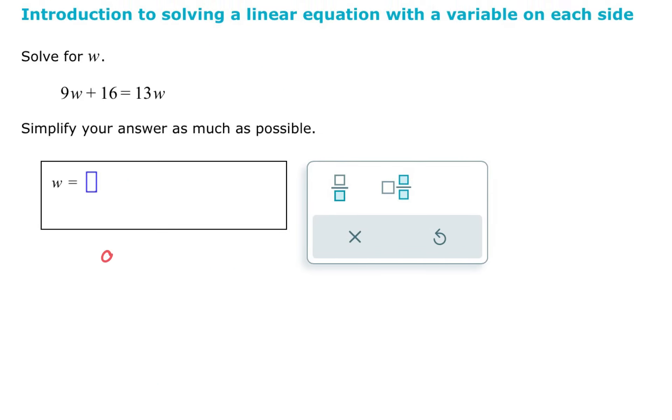Another example, we have 9w plus 16 equals 13w. I think I'm going to subtract the 9w from the left and the right. Then I'll have 16 on the left. And 13 minus 9 is 4w on the right. Divide by 4 on both sides. And I'm left with 1w on the right. 16 divided by 4 is 4 on the left.